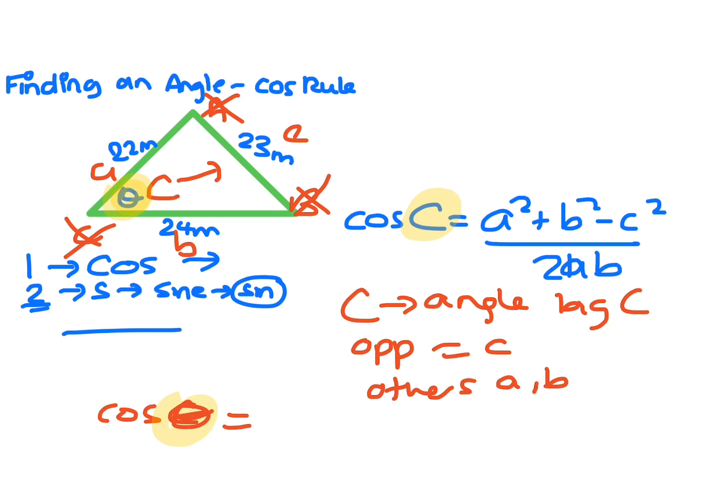So that means we're going to do 22 squared plus 24 squared minus c squared. So what have they got for c squared here? 23. So you've got to minus the 23 squared, all over 2 times a times b. So 2 times 22 times 24.